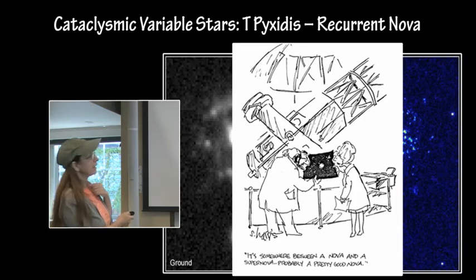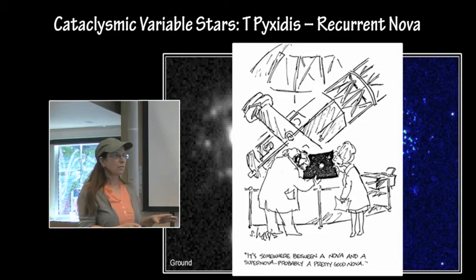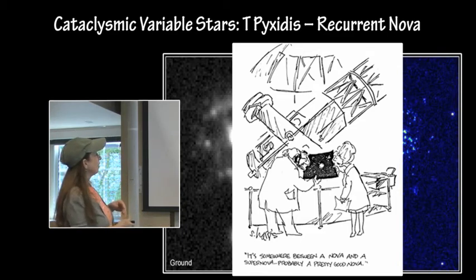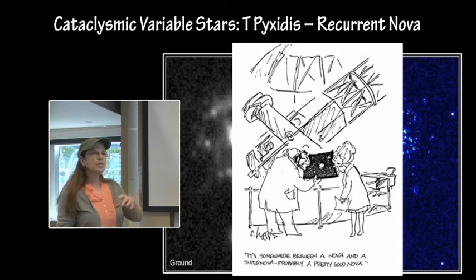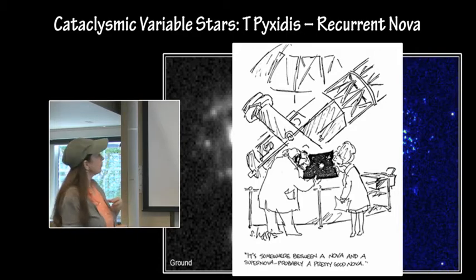What makes this one different is, number one, there's only a handful of these. I think there's around seven or eight so far that's been discovered. What makes them so different is that not only do you have the nova event where the white dwarf undergoes this thermonuclear event on its surface, but it also ejects debris.